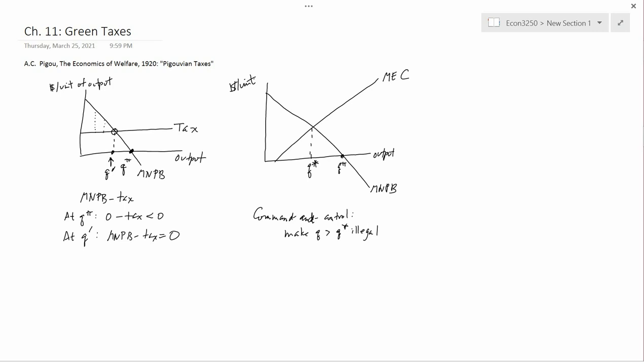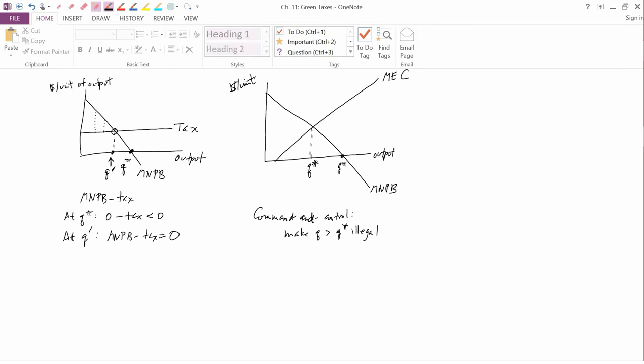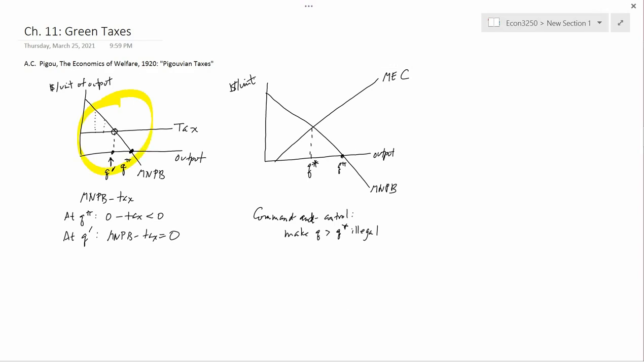It just has to make output greater than Q star illegal. But Pigou said that using a tax, we can get the firm to reduce output. And that's what we want. We want the firm to reduce output from Q pi to Q star. So then the question becomes, how high should you set the tax to get the firm to produce Q star?